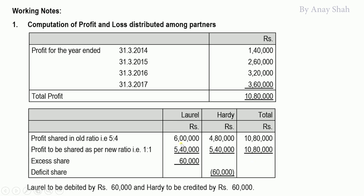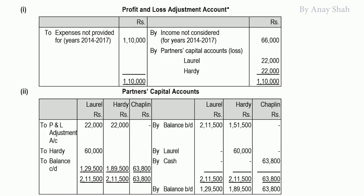L should have received 5,40,000 but actually received 6,00,000 — meaning L received excess profit, so it must be returned. H should have received 5,40,000 but only received 4,80,000 — meaning H received less. So L will pay H 60,000. Entry: L's capital account debited 60,000; H's capital account credited 60,000.